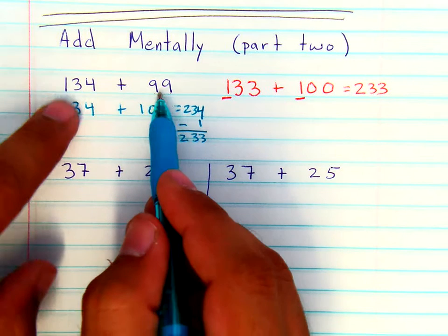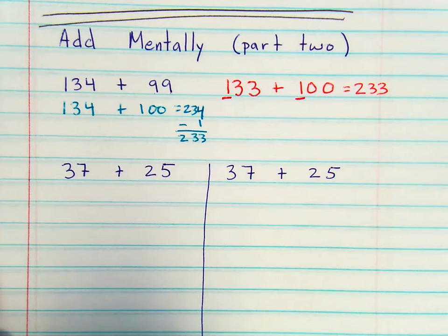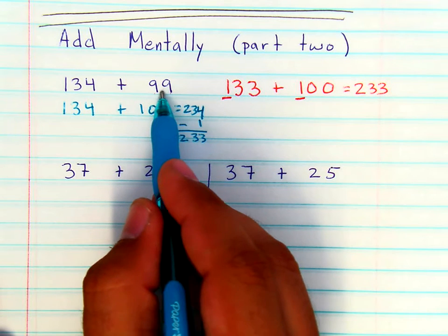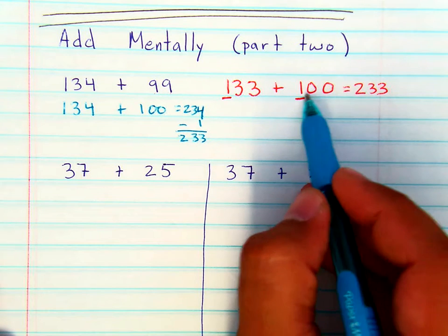So 99 or even 98 can be solved in your head by thinking of the number that it's very close to, by estimating 1 or 2 away from 100.